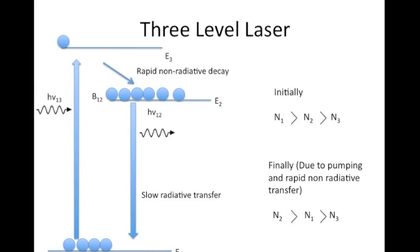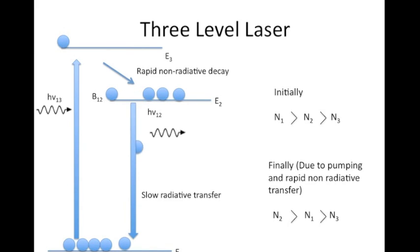Since we are rapidly pumping atoms to energy level E2 and the mean lifetime of atoms in this level is fairly large, we can achieve population inversion between levels E1 and E2, so that N2 > N1 > N3. Eventually one atom from level E2 falls back to level E1 and emits a photon by spontaneous emission. This photon then triggers stimulated emission from another atom in the metastable state as it moves through the lasing medium.